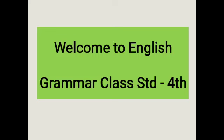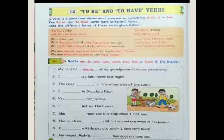Welcome to English Grammar Class Standard 4. Students, in Grammar we are going to learn lesson number 12: to be and to have verbs.